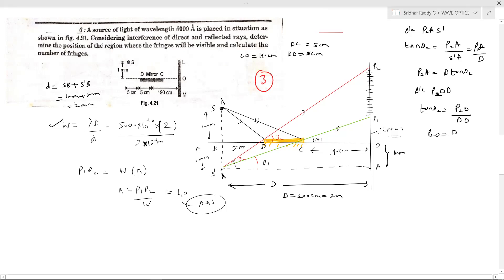So P2 O is equal to D O by tan theta 2. This is the one equation I'll get. Similarly from the bigger triangle P1 A S dash, tan theta 1 equal to P1 A by S dash A. From one more triangle, triangle P1 O C, tan theta 1 equal to P1 O by O C. O C is equal to we know 190 cm. So taking help of all this, I can easily calculate P1 P2.